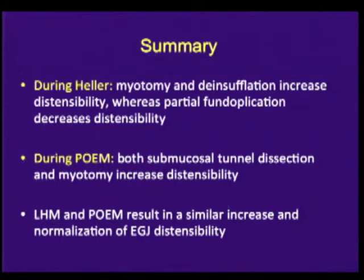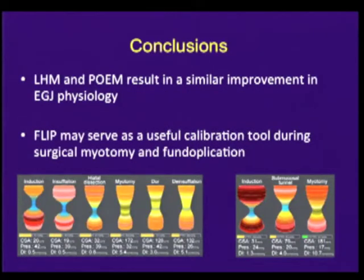In summary, during Heller, myotomy and de-insufflation of pneumoperitoneum increased distensibility, whereas partial fundoplication decreased it. During POEM, both submucosal tunnel dissection and myotomy increased distensibility, bringing into question the role of the submucosa in the pathophysiology of achalasia. POEM and Heller appear to result in a similar improvement in EGJ physiology, and FLIP may serve as a useful tool for intraoperative calibration of both myotomy and fundoplication during these operations.